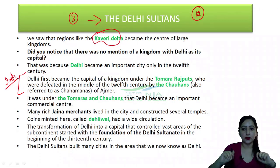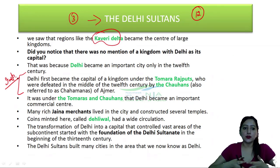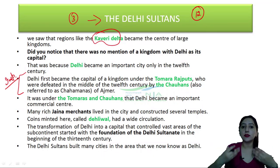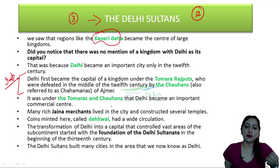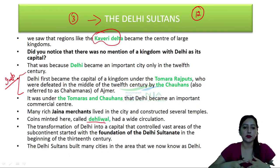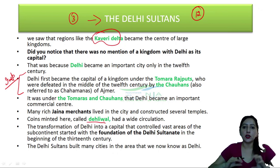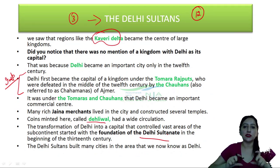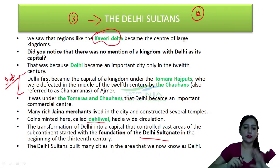The Chauhans belonged to the same family as the Tomars, and Delhi was under both the Tomars and the Chauhans. Delhi became an important commercial center with many Jain merchants, temples, and coins. The coin minted here — called the 'Delhi wall' — was in wide circulation. However, Delhi only became the capital of a big kingdom with the foundation of the Delhi Sultanate in the beginning of the 13th century. Before that, the Rajputs and Chauhans had control over only a small area.